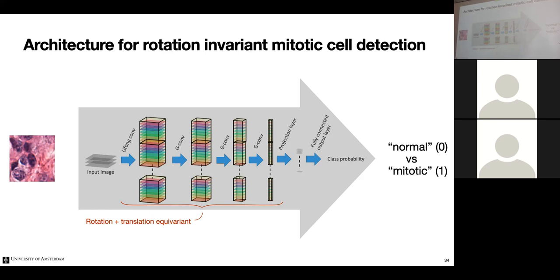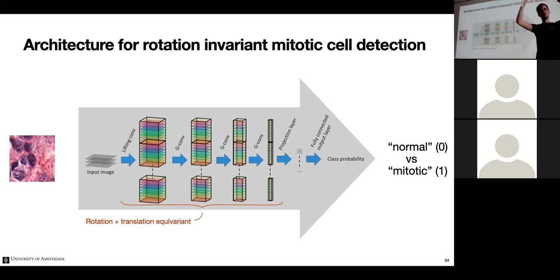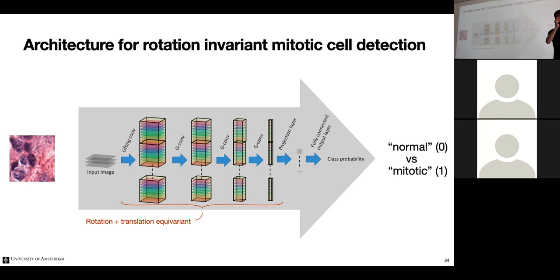A student asks why this is better than data augmentation during training. The speaker explains: data augmentation is a global transformation — it makes the network invariant to global rotations of the image, but not to local rotations. Group convolutions detect patterns locally under all transformations, because the kernels are localized. By stacking localized convolution filters, you obtain global invariance while also being able to detect patterns under all possible local transformations.